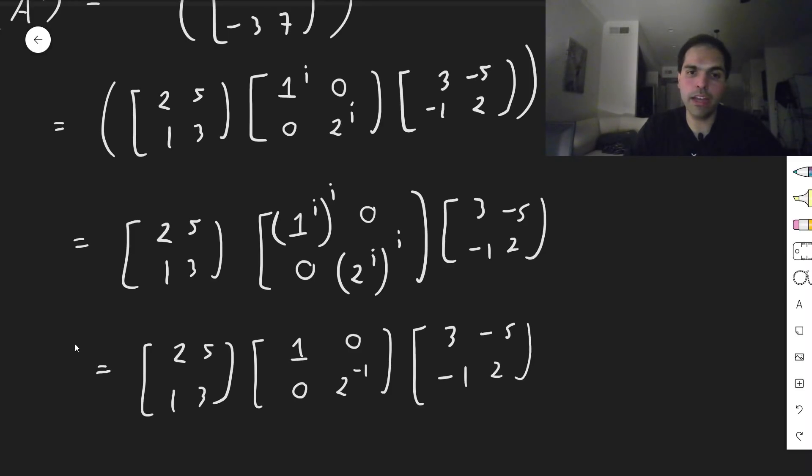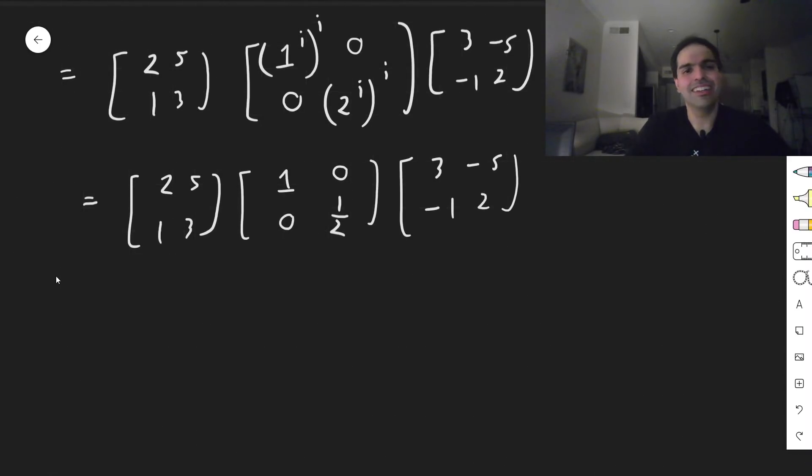But 2 to the minus 1, that is 1 half. And I'm sure you see it coming. So we get 2, 5, 1, 3, and then 3 minus 5, minus 1 half, and then 1. And let's multiply that out.